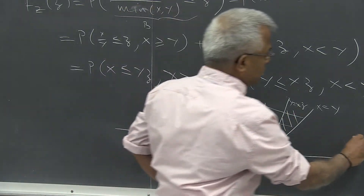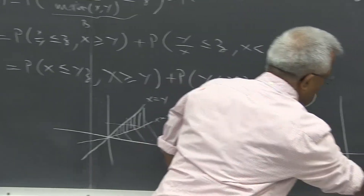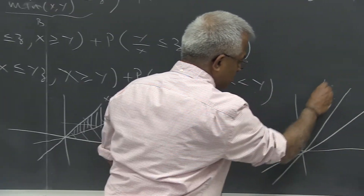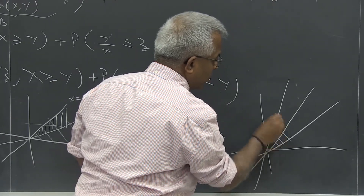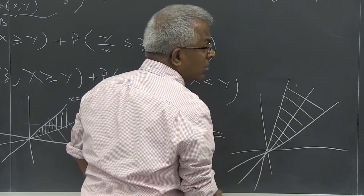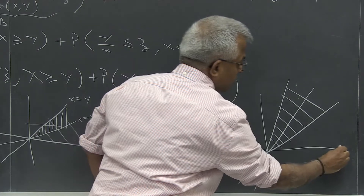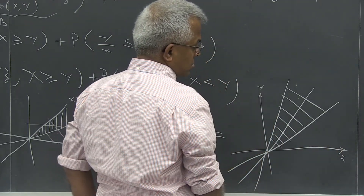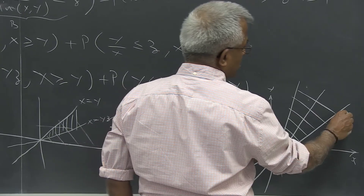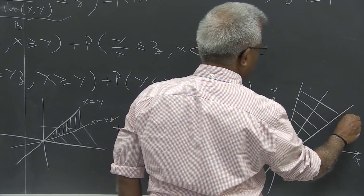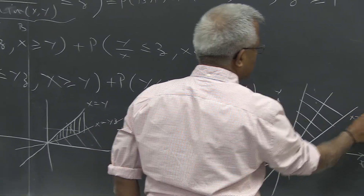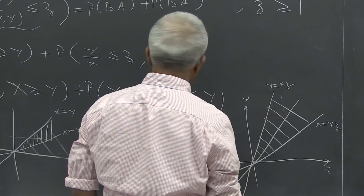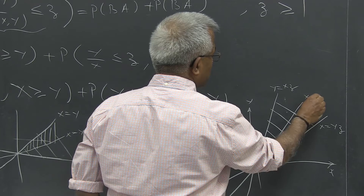If you combine these two regions, it will be like this. You just need to integrate over this combined region. So this is x, this is y, this is the line x equal to yz, this is y equal to xz, and this is x equal to y.